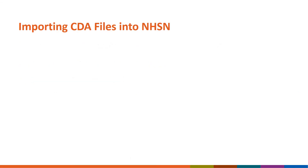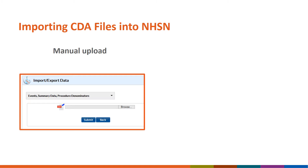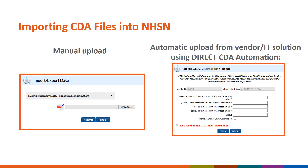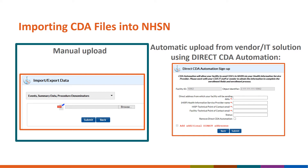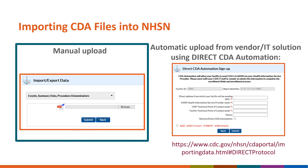There are two ways to upload CDA files into NHSN: manual upload using the import-export data screen, and automatic upload from a vendor or IT solutions using the direct CDA automation screen. In this quick learn, we will discuss how to manually upload CDA files into NHSN. For more information on direct CDA automation, visit the CSSP website listed on this slide.